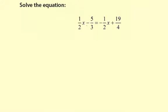Solve the equation: 1 half x minus 5 thirds equals negative 1 half x plus 19 fourths. I'm going to solve this by graphing.